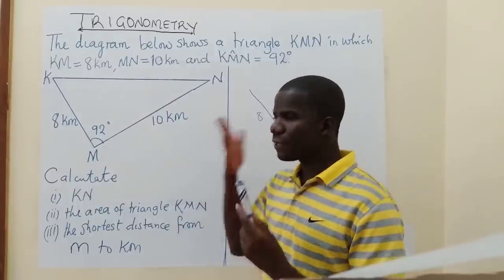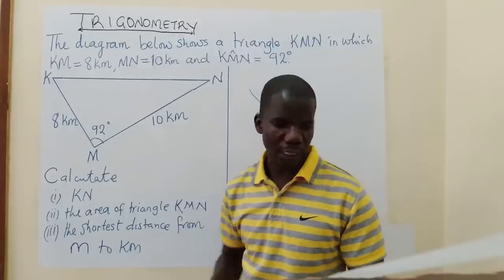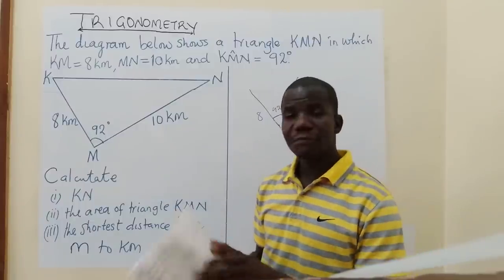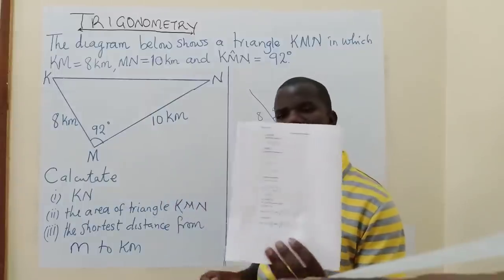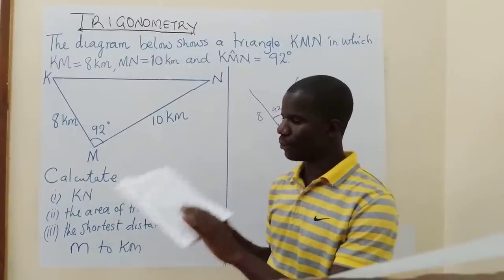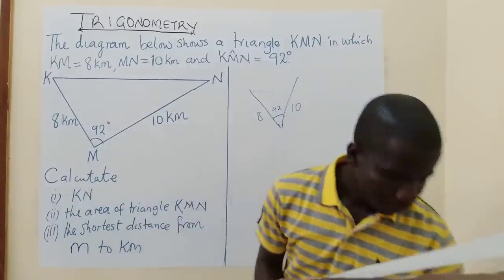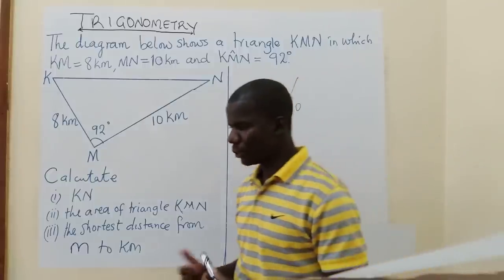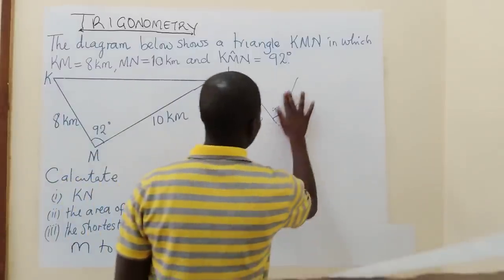After you have determined that you need to use cosine rule, you must know the formula. From 2016, the formulas are always given on the cover of your exam paper — when you just open the question paper on the cover, the formulas are given. So we need to use cosine rule here. Let's see the process that is supposed to be carried out.